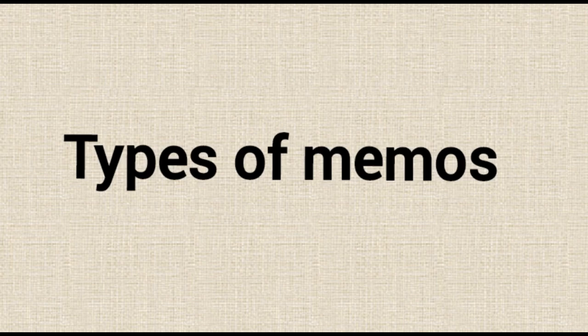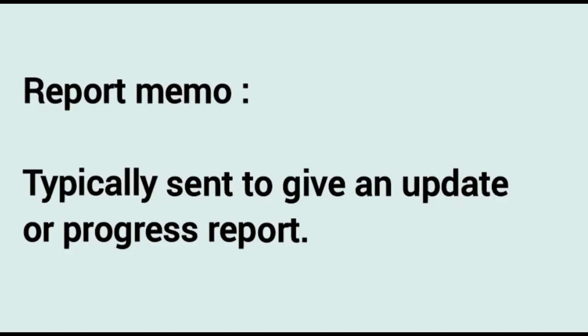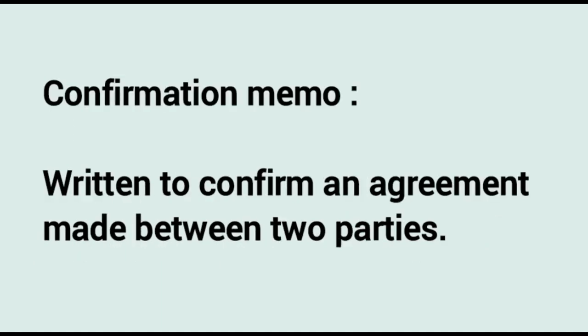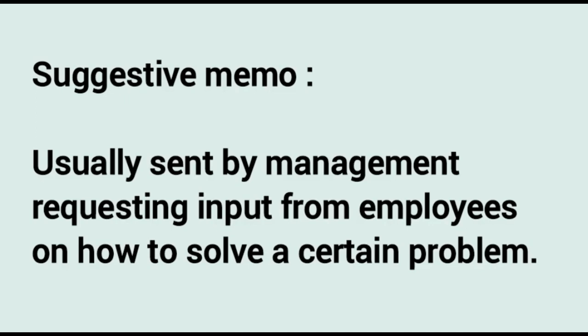There are a few main types of memos you can write depending on your needs and the content of your message. The most common types are: first, a Report Memo, typically sent to give an update or progress report; second, a Request Memo, submitted as a request to a certain person or team — persuasive language works well here; third, a Confirmation Memo, written to confirm an agreement made between two parties; and fourth, a Suggestive Memo, usually sent by management requesting input from employees on how to solve a certain problem.